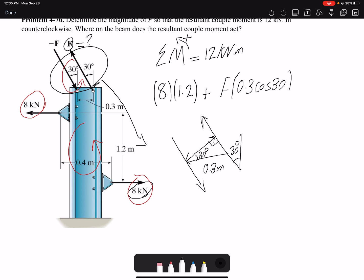So that would be F times the moment arm, which is 0.3 cosine 30. 0.3 cosine 30 will give me the perpendicular distance between the two, equals 12 kilonewton meter. So there is only one unknown, and that's force F. Force F would be 9.24 kilonewton. That's the first part of the problem.